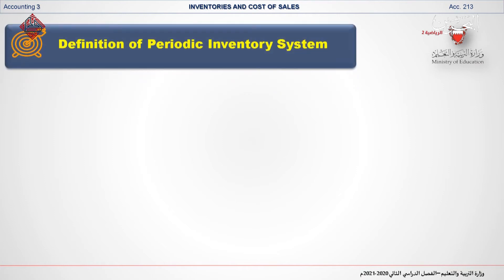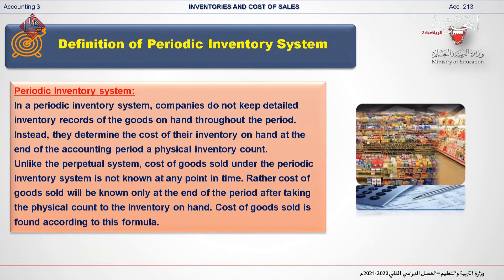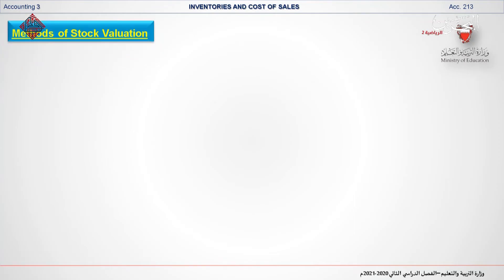The periodic inventory system is a method of inventory valuation for financial reporting purposes in which a physical count of the inventory is performed at specific accounting periods to determine the cost of inventory on hand. Unlike the perpetual system, cost of goods sold under the periodic inventory system is not known at any point in time, because valuation is to be done at specific accounting periods.